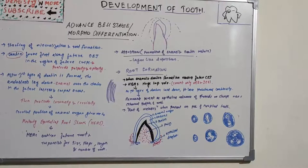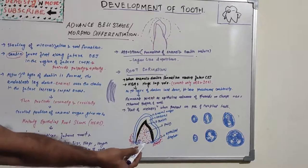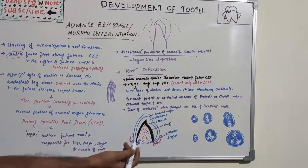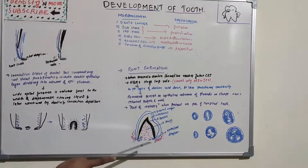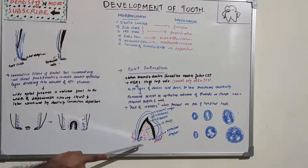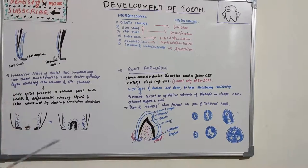The free end of the diaphragm does not grow into the connective tissue; instead, the epithelium proliferates coronally to the epithelial diaphragm. The connective tissue of the dental sac surrounding the root sheath then invades the continuous double epithelial layer, dividing it into a network of epithelial strands.